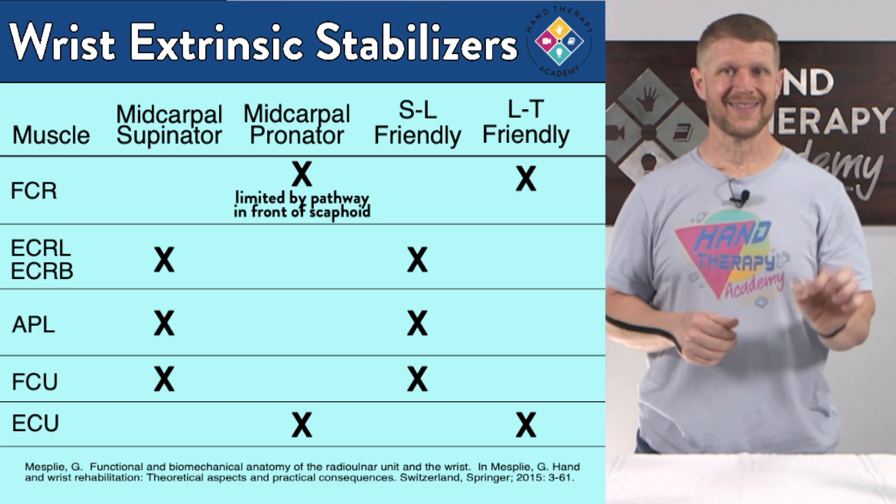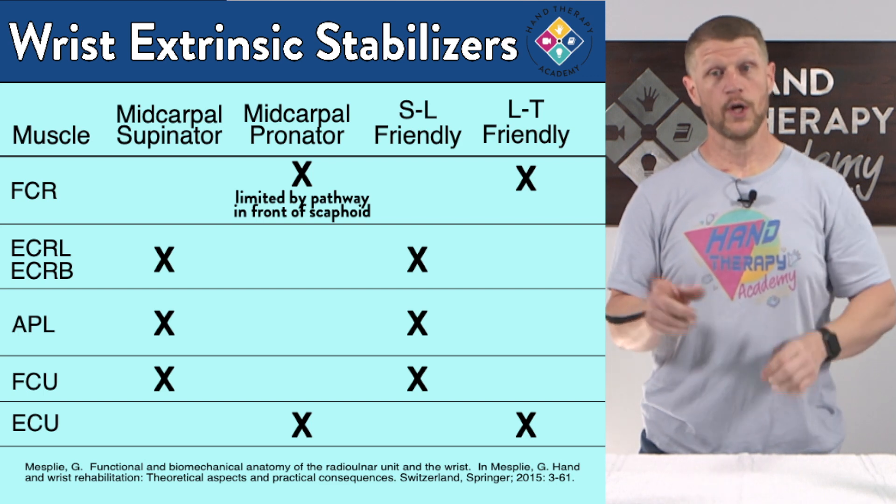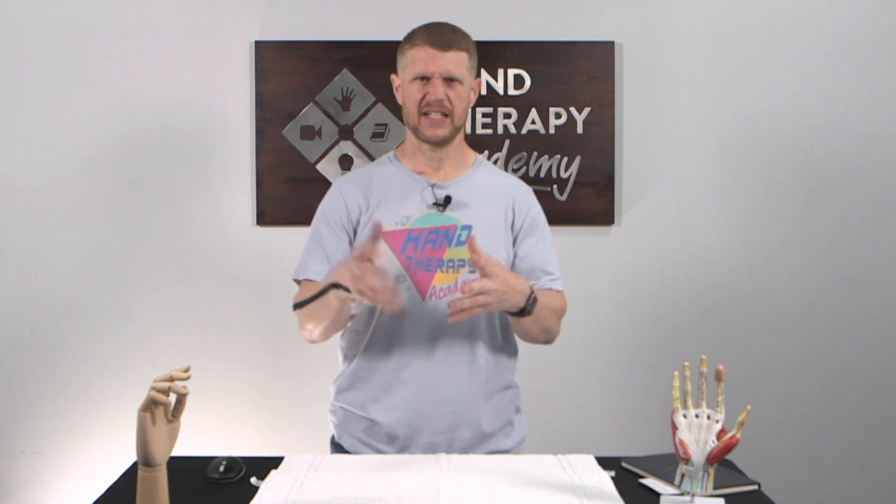The friendly muscles correct the dysfunctional movement of the scaphoid or triquetrum. A quick recap: CIND is instability between the two carpal rows. CID is instability within the proximal row — SL and LT injuries, VISI and DISI. In CIND, the proximal row follows the movement patterns of the scaphoid — so when the wrist flexes, the proximal row does what the scaphoid does.